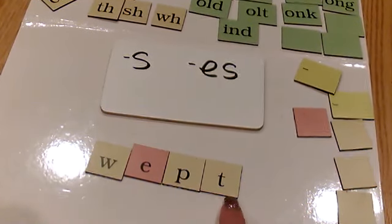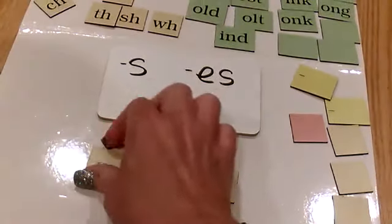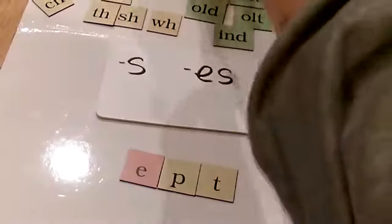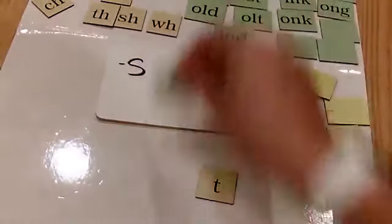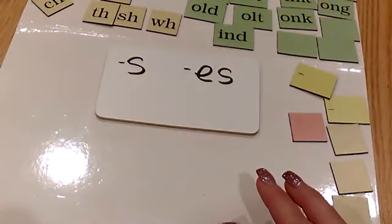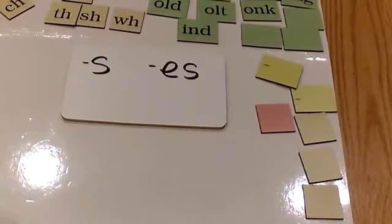Now you're going to write a sentence for me. Repeat: Jill will munch on her plum. Jill will munch on her plum. Go ahead, hit pause and write that sentence.